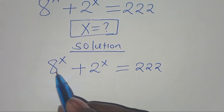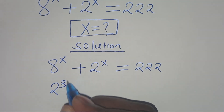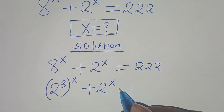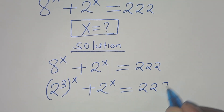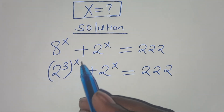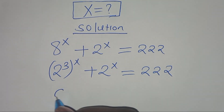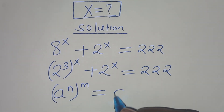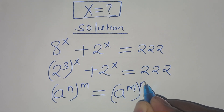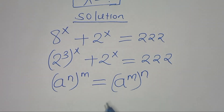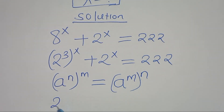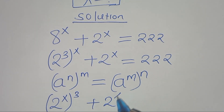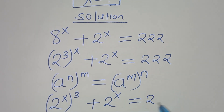We can express 8 to the power x as 2 to the power 3, raised to the power x, then plus 2 to the power x, this is equal to 22. Now 2 to the power 3 raised to the power x is in the form of a to the power n raised to the power m, which we can express as a raised to the power m times n. Applying this exponent property, we have 2 to the power x raised to the power 3, plus 2 to the power x, this is equal to 22.